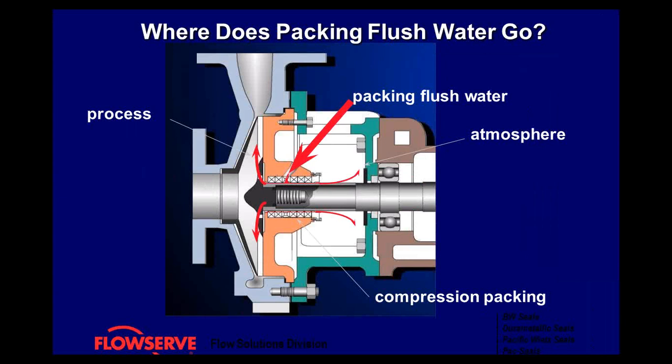Where exactly does the packing flush water go? Packing has to be lubricated because it is in contact with the shaft. Usually there's a lantern ring where the flush water can be applied. That water has to leak into either the process or to atmosphere, so that it can lubricate and cool that shaft.